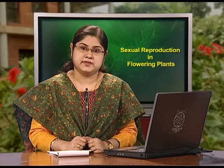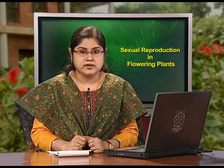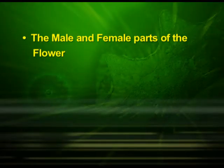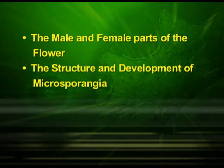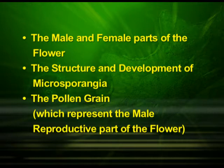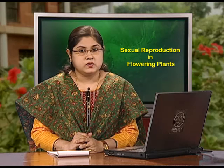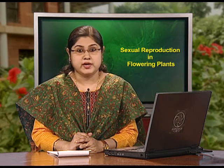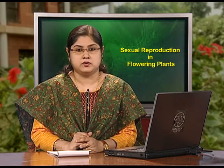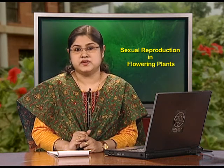In the first part of this chapter, we have already discussed the flower as a reproductive structure of angiosperms, the male and female parts of the flower, the structure and development of microsporangia and the pollen grain, which represent the male reproductive part of the flower. We closed the first episode with some points to think about. Let us discuss them first.